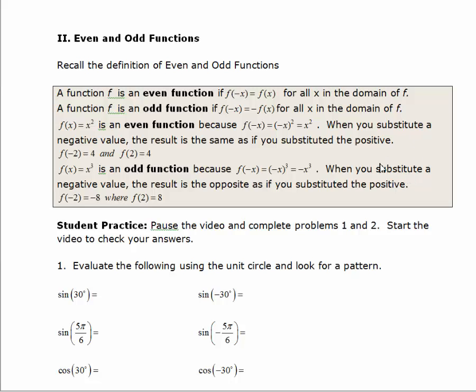For the function x cubed, if you take f of negative 2, you'll get negative 8, whereas f of 2 gives you positive 8. You get the complete opposite y-value when you change the sign of the x values. I'd like to use the unit circle to evaluate the trig functions below and see if you can determine which of the trig functions are even and which are odd.